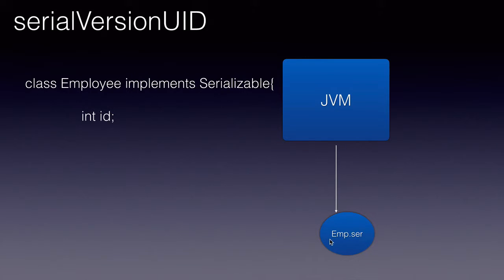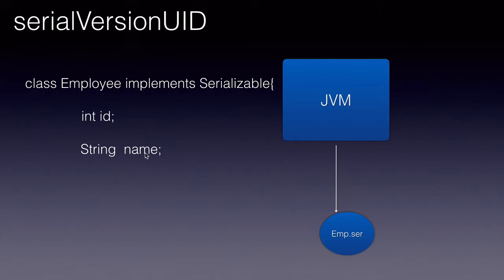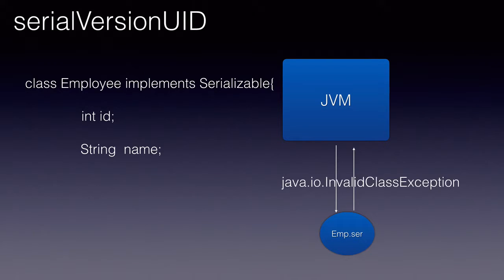Once it's serialized, I have made changes to the class and added a new field called name for the employee. Our JVM has loaded this new class into memory as we are using it at a different place in our application. Now if we try to deserialize the object which we serialized earlier, we will get a java.io.InvalidClassException.